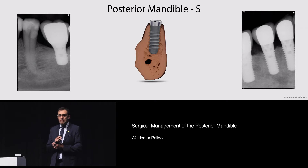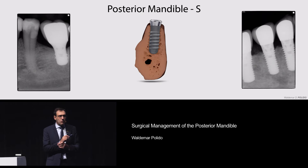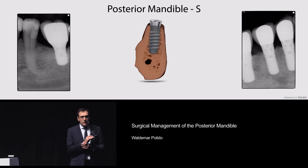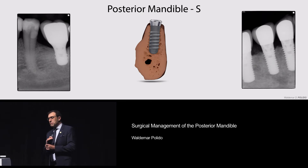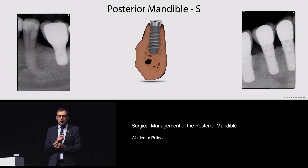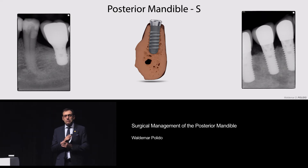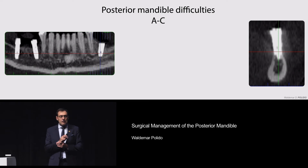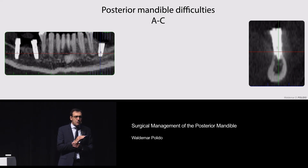The posterior mandible, according to the ITISAC classification, is classified as a straightforward situation when we have enough bone in height and width, and we can do single tooth restorations or three to four unit bridges.